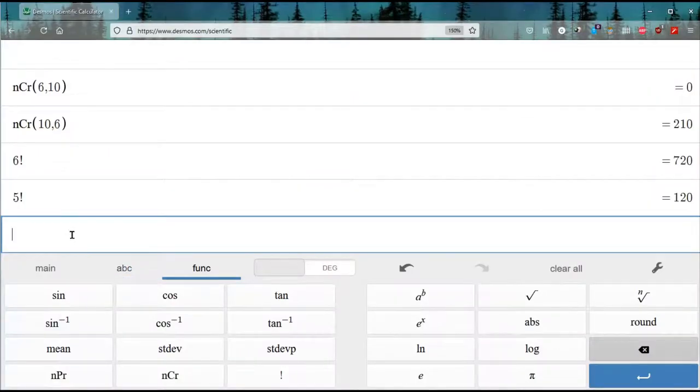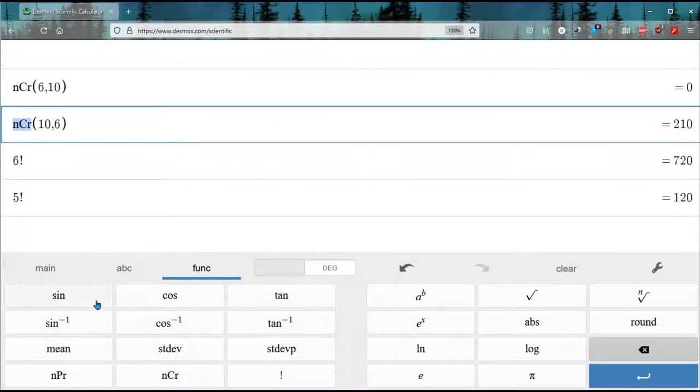And on the calculator, that is ncr, the choose function, not the permute.